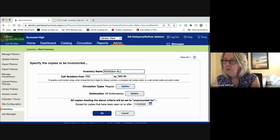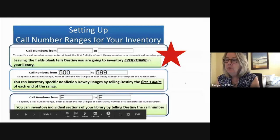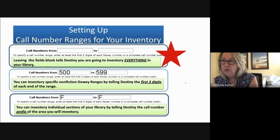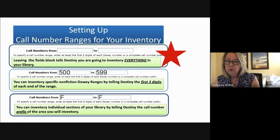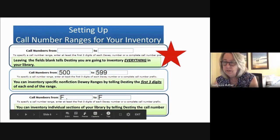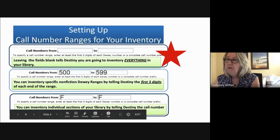Here's a reminder — and you'll get these slides. The call number ranges for your inventory are fairly simple. You can do a single Dewey range — for example, only the 500s, or 600 to 699, or 000 to 100, whatever you want to do. You can do your entire fiction section simply by doing F to F. You can do your entire easy book collection by doing E to E. This first example you need to pay close attention to.